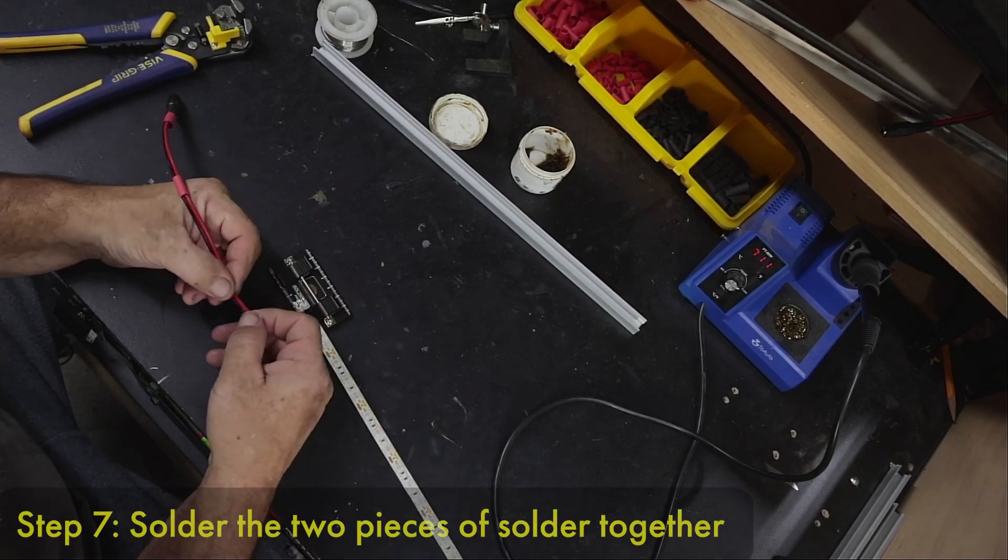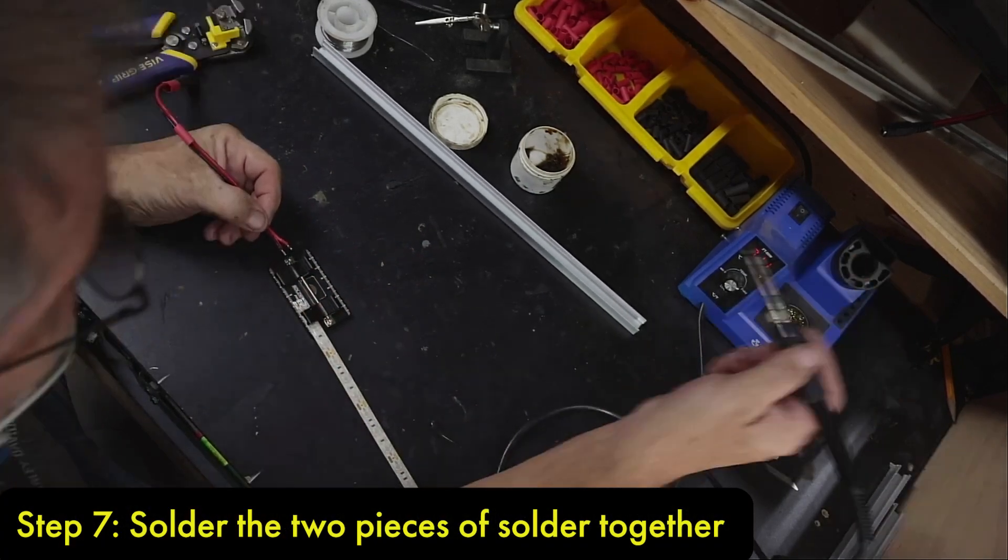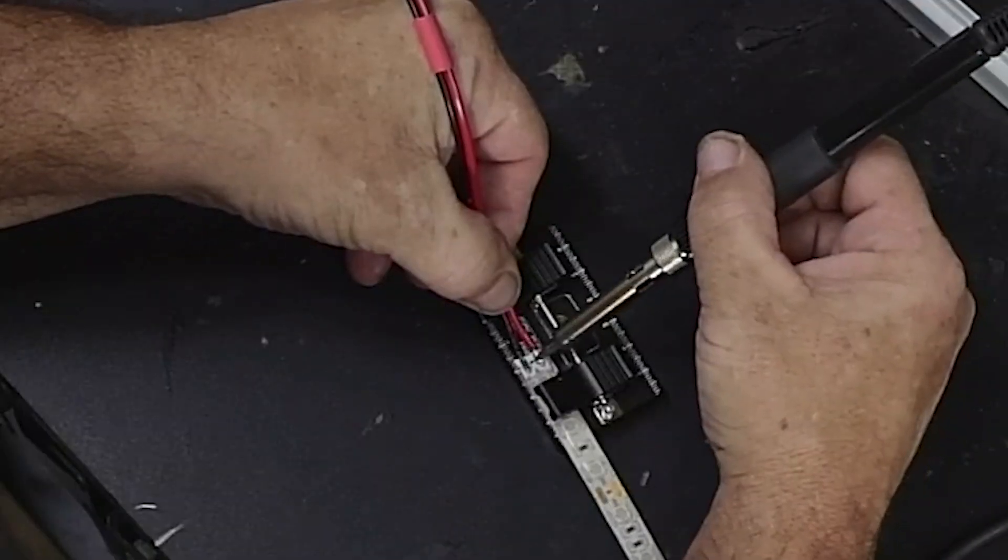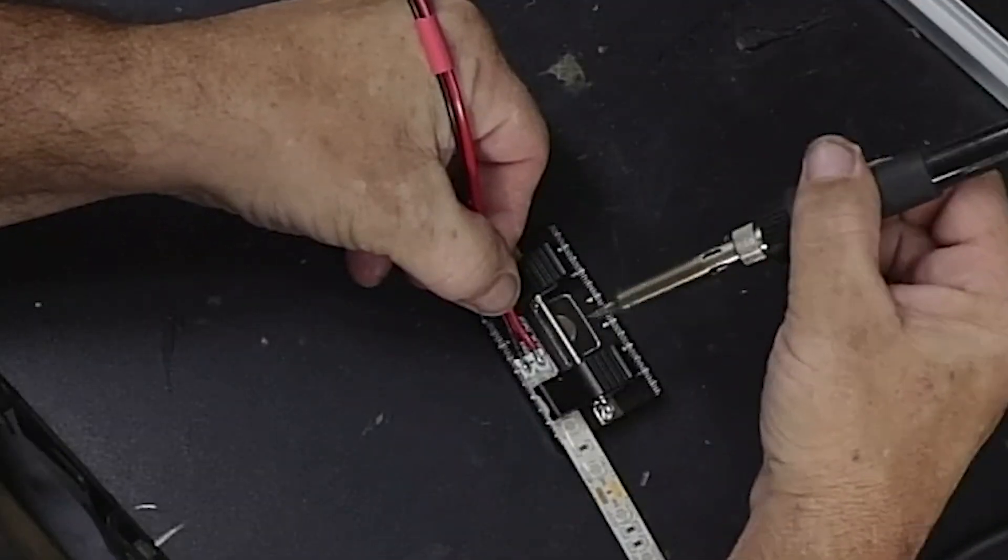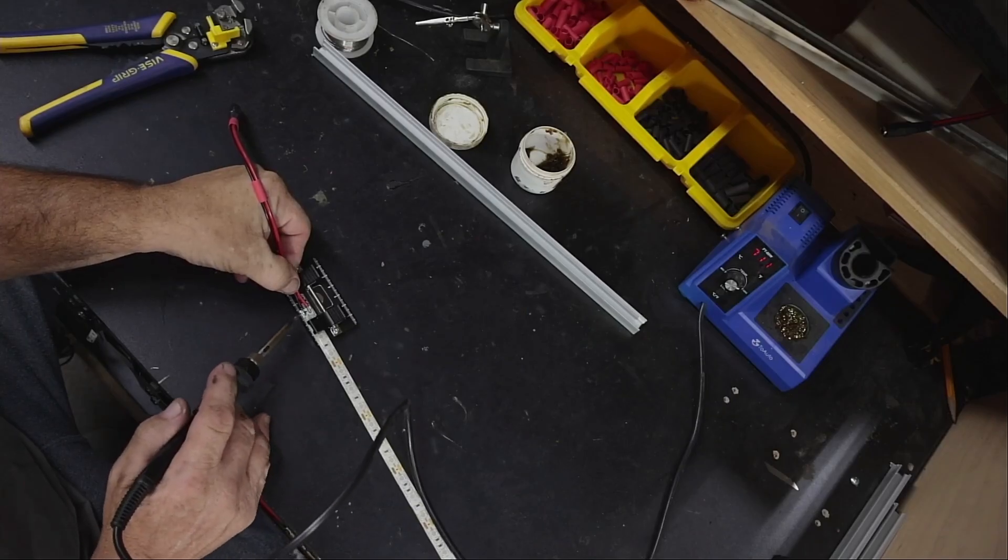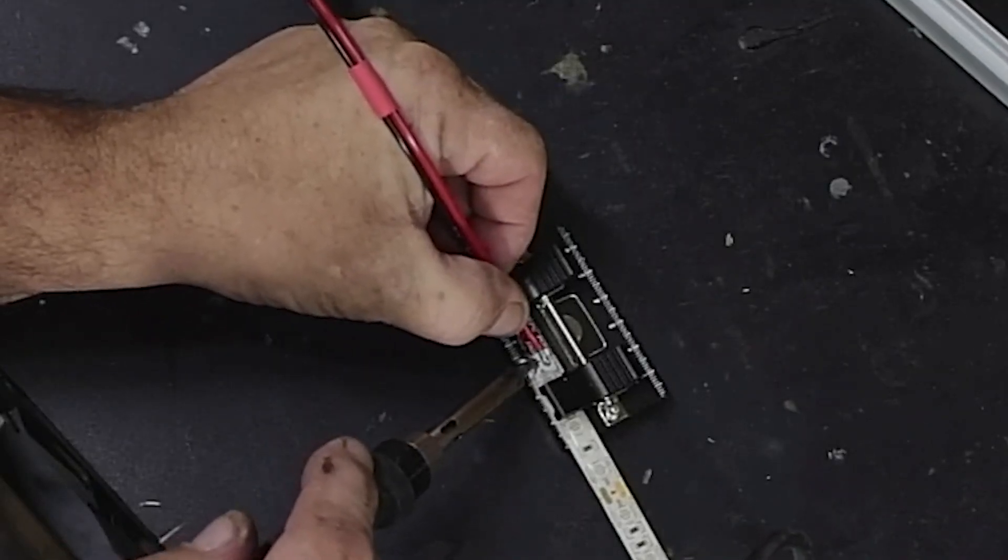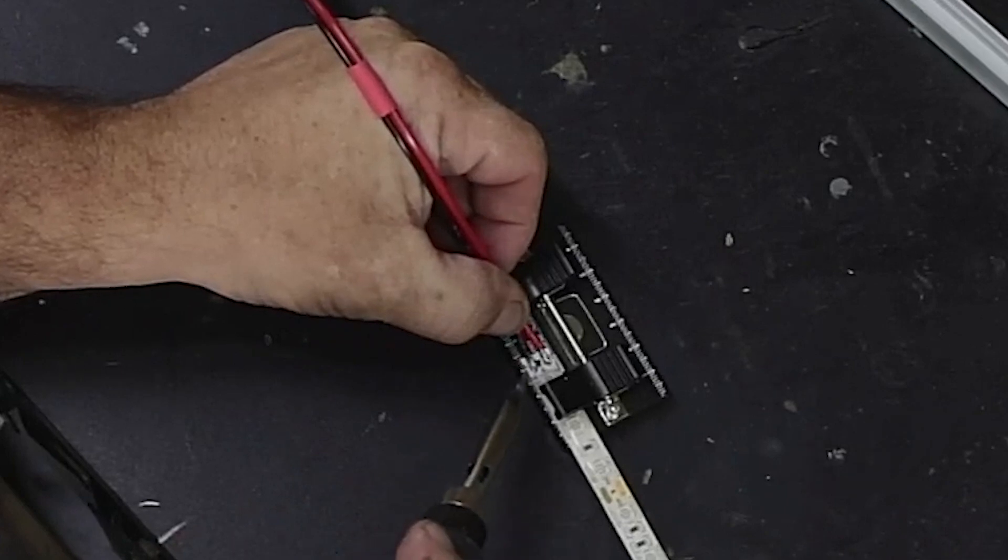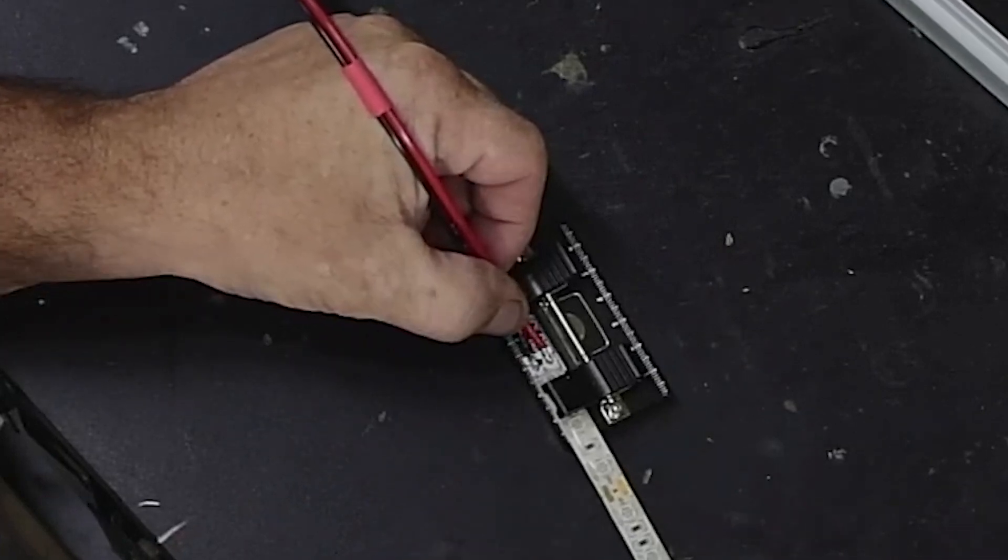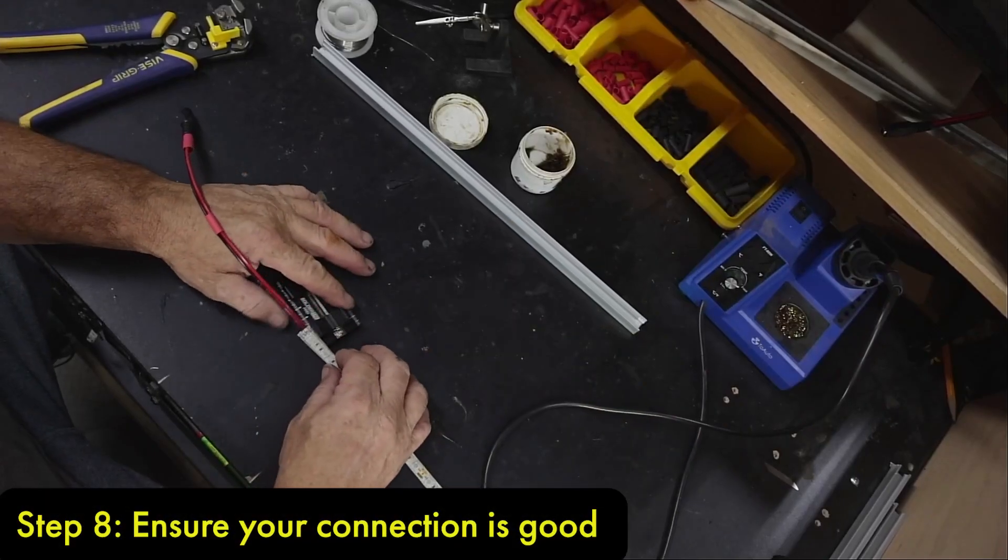So here we go - it's as simple and easy as this. There's one, and you'll notice it's shiny. You have to hold on to it until it melts together, and then let go and it'll turn dull. That's a proper connection.